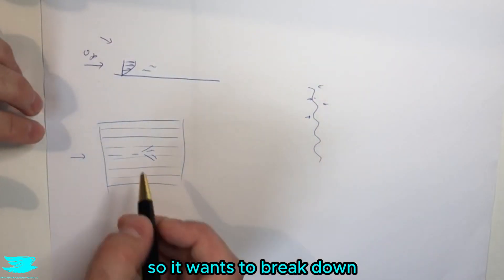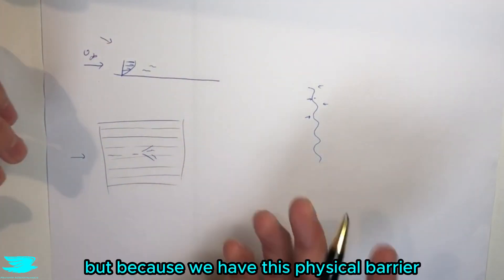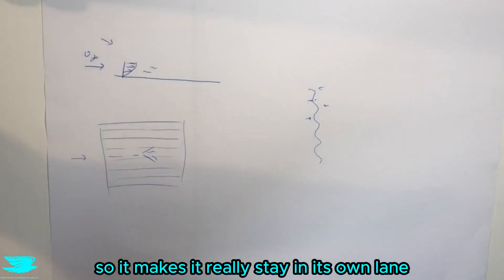become three-dimensional. So it wants to break down in this three-dimensional pattern that we saw earlier. But because we have this physical barrier it stops it from doing that, so it makes it really stay in its own lane.